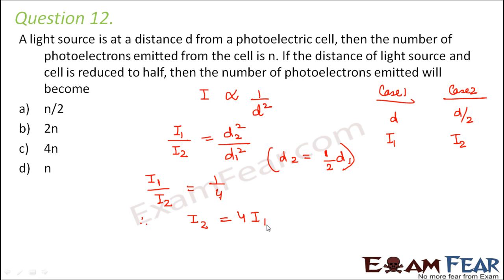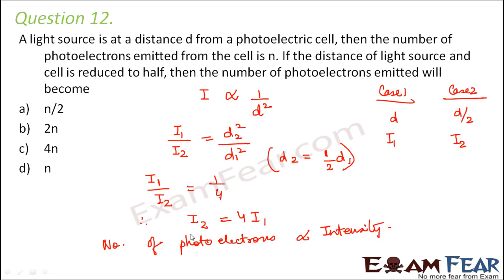Therefore, the number of photoelectrons — since as intensity of light increases, the number of photoelectrons emitted also increases, the number of photoelectrons emitted is directly proportional to intensity. The intensity becomes 4 times when distance is reduced by half, so the number of photoelectrons would also become 4 times. The correct option is C.